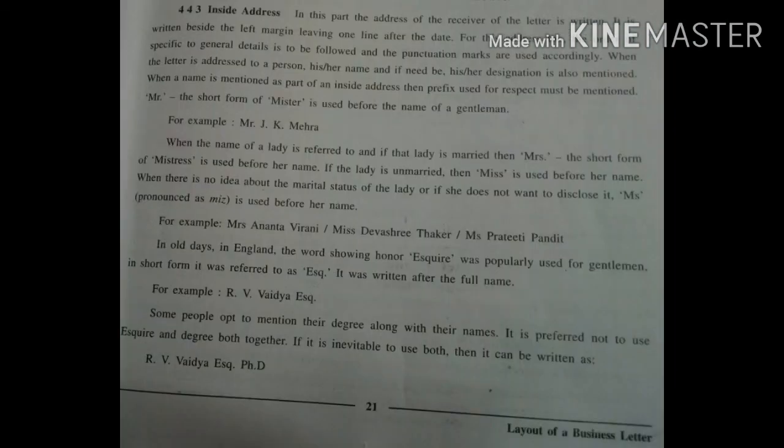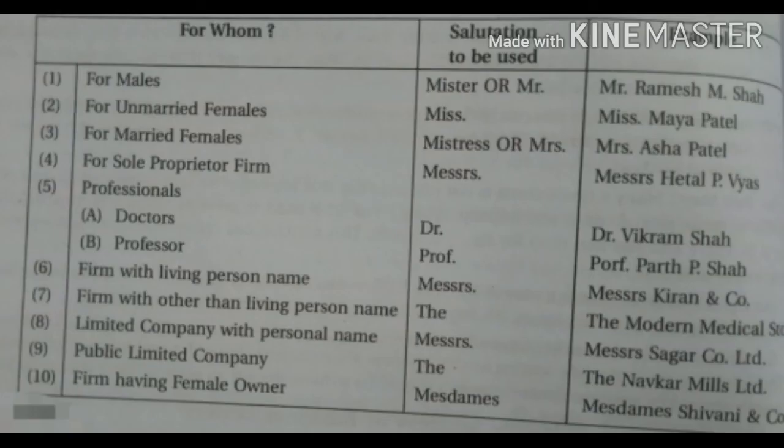The second point is the inside address. The person or firm to whom the letter is written — their address is written as the inside address. It is written on the left-hand side of the letter after keeping the margin space. Full stop and comma are used for the inside address. The name of the person to whom the letter is written is written on the top, followed by the designation and address. The words used in the letter for showing courtesy are: for males, Mr.; for unmarried females, Miss (M-I-S-S). You can see above to whom and how the salutation is to be used, with an example.